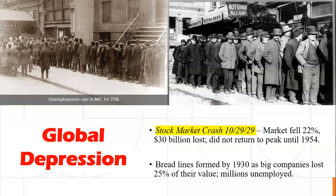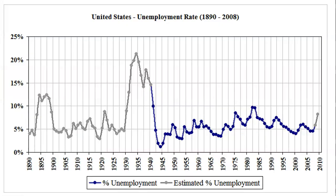Many of you are already aware of the global depression — the stock market crash of 1929. The market fell approximately 22%, losing about $30 billion, and it didn't return to its peak until around 1954. Bread lines formed by 1930 as big companies lost 25% of their value, and there were millions and millions unemployed. Looking at the numbers, they peak after 1930, with no real dip until 1945 when the war effort put everyone back to work. There's another peak in the 1980s and around 2010 — recessions cause these peaks — but of course the largest was the stock market crash.